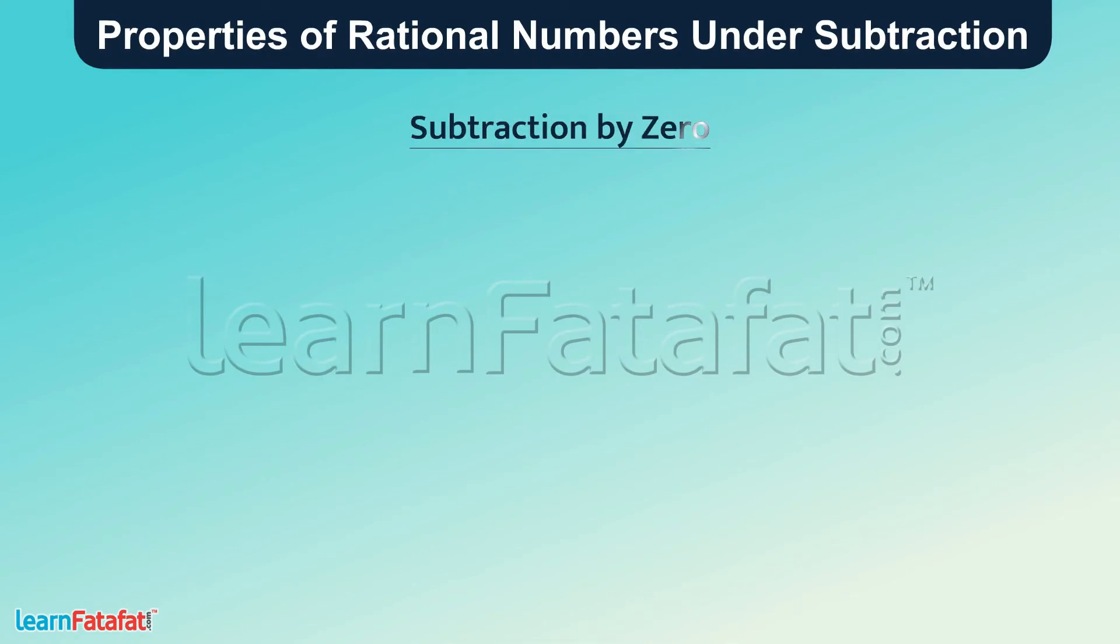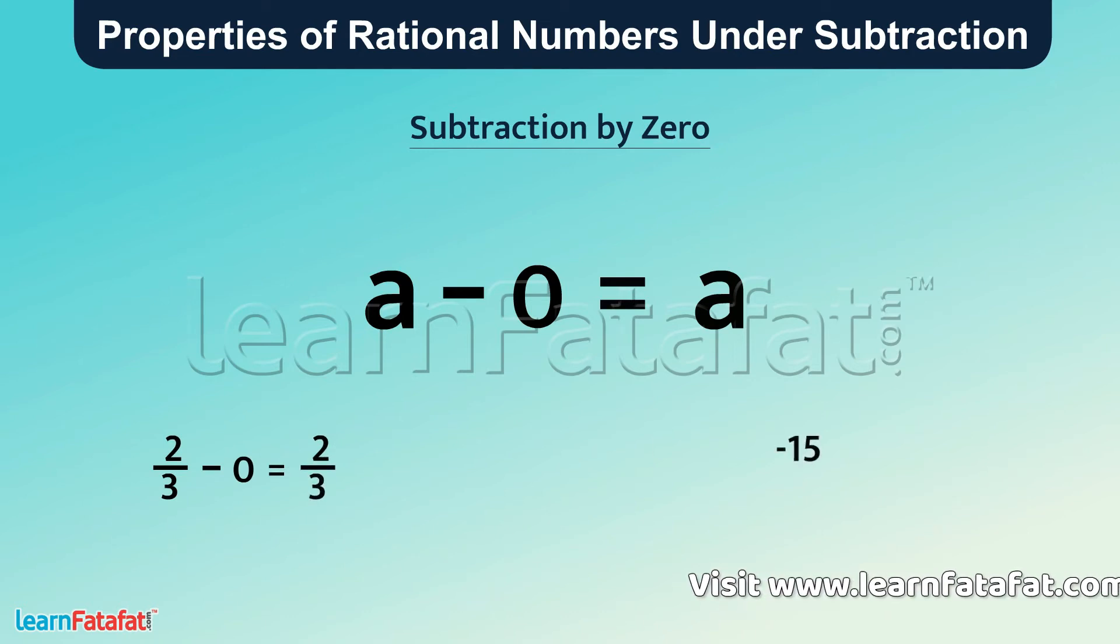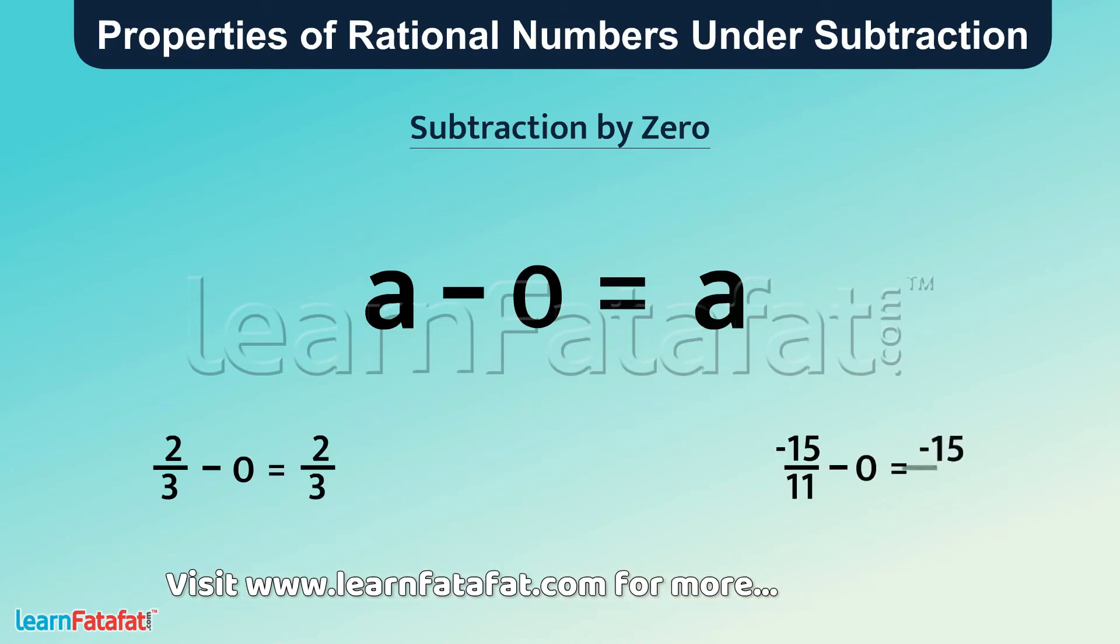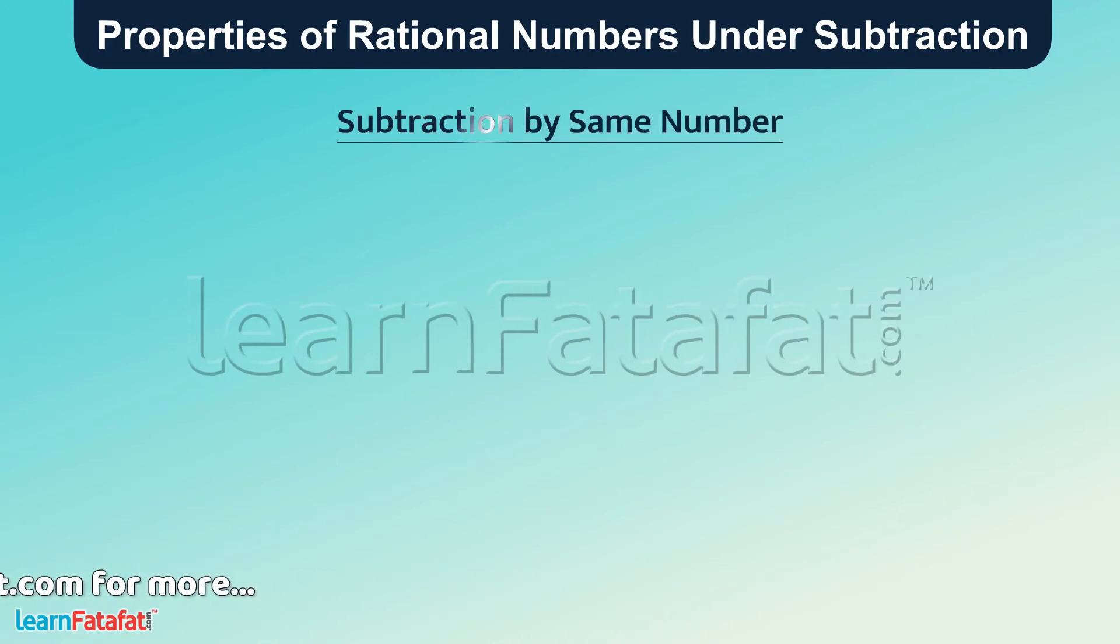Subtraction by 0: If 0 is subtracted from any rational number a, then the result is the same rational number a. a minus 0 equals a. For example, 2 by 3 minus 0 equals 2 by 3. Minus 15 by 11 minus 0 equals minus 15 by 11.